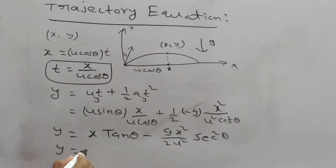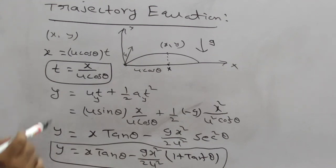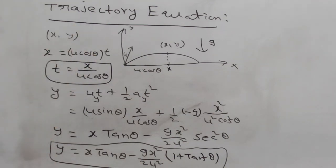Now you can write y as x tan theta minus g x square by 2 u square. What is secant square in terms of tans? So secant square is nothing but 1 plus tan square theta. So this is y equation. So we got relation between y and x. This gives the trajectory equation. The trajectory equation is nothing but the path of the projectile.